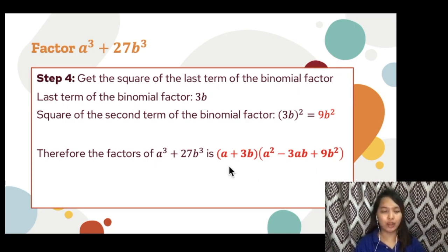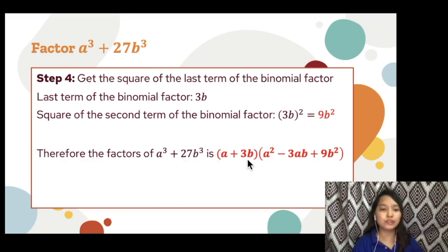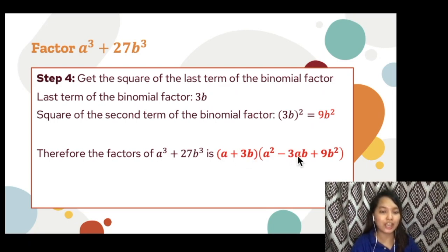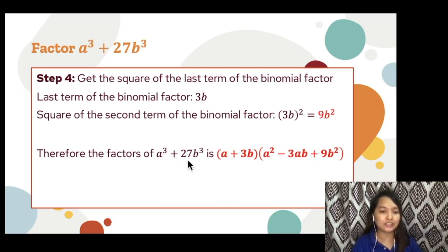Therefore, the factors of a cubed plus 27b cubed is the quantity a plus 3b times the quantity a squared minus 3ab plus 9b squared. The technique: get the cube root of the first and last terms — cube root of a cubed is a, cube root of 27b cubed is 3b. Square the first term: a squared. Take the negative product of first and last: negative 3ab. Square the last term: 9b squared. This gives the complete factored form.